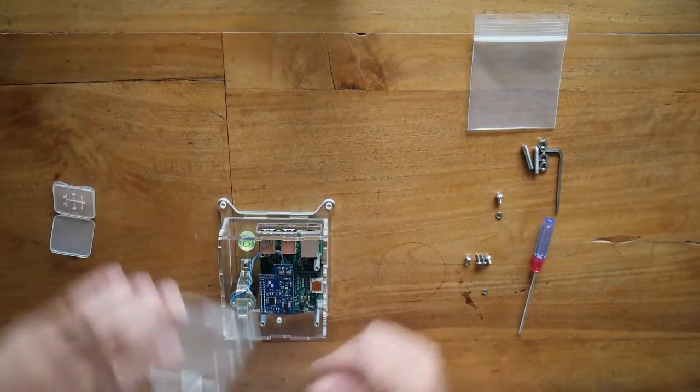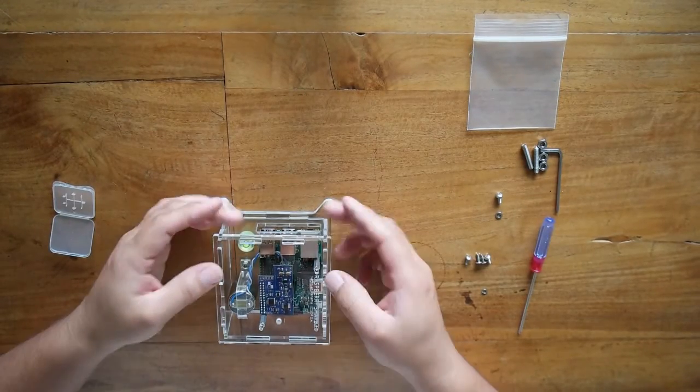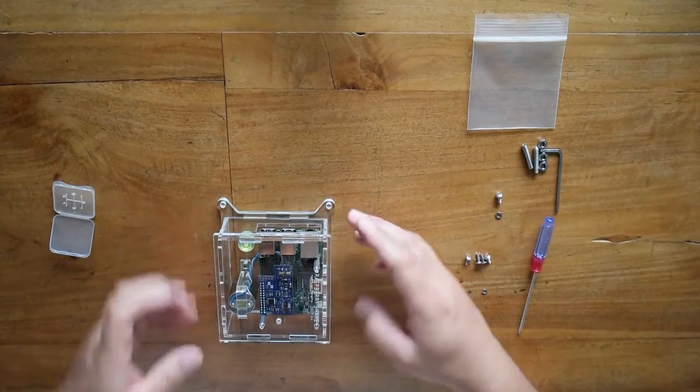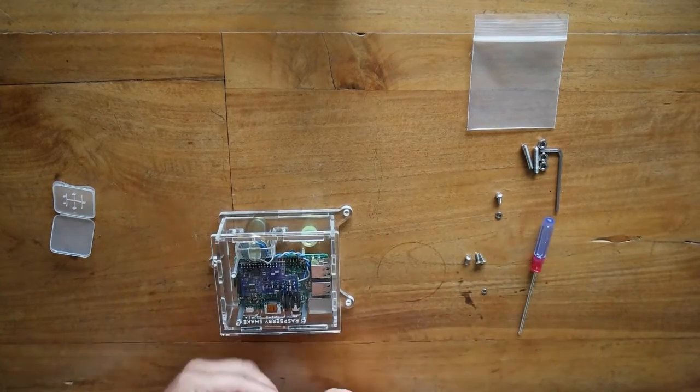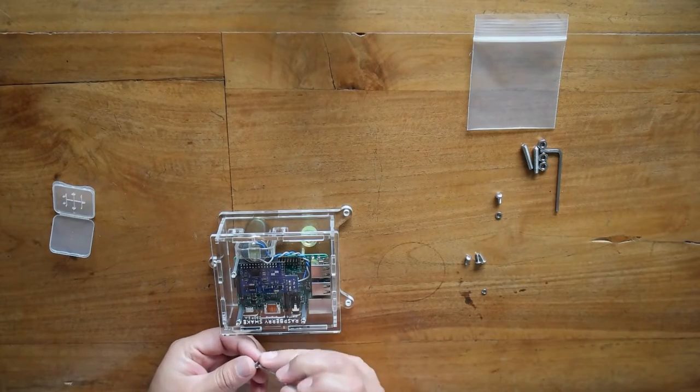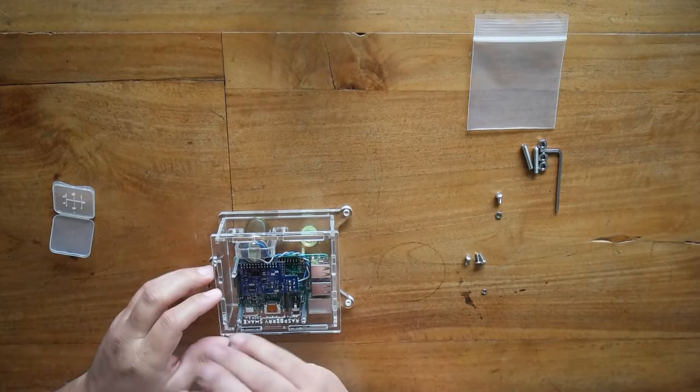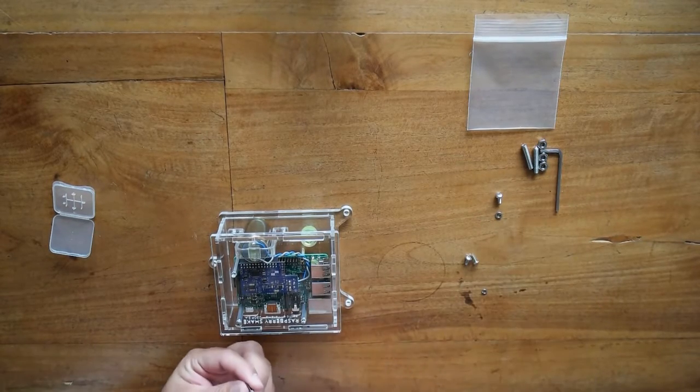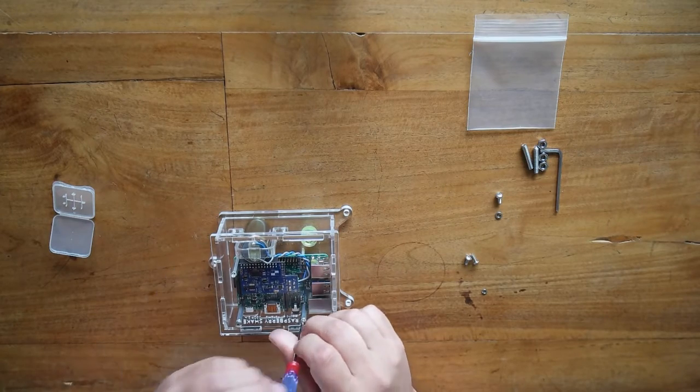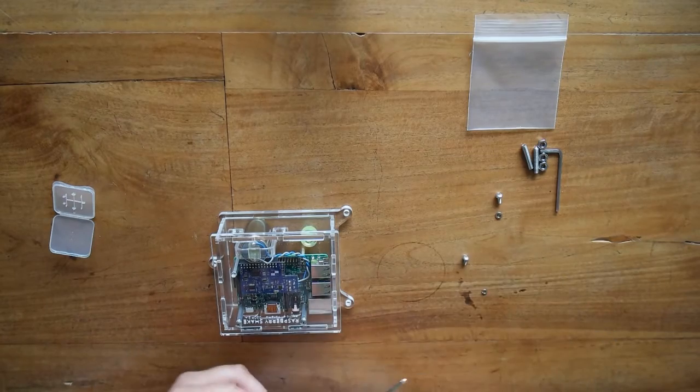Now take the top face of the enclosure and put it over, matching with the position of the long standoffs. Now take one screw type 1 and with a Phillips driver screw it into one of the holes of the top enclosure face. Repeat this step two times more. We recommend to cover entirely your Raspberry Shake because otherwise you will get unwanted long period noise.